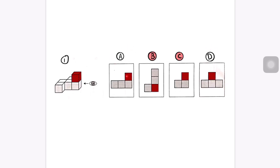Looking at the two remaining options: in A, the red square is positioned to the right-hand side of the shape, whereas in D it is positioned in the center. Since the red cube is in the middle of the 3D shape, D must be the answer. So D is correct and we eliminate A.